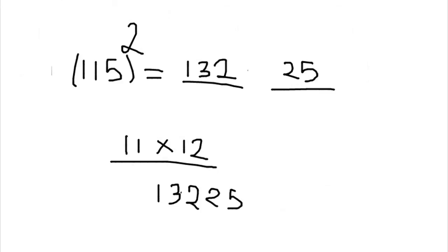So the final answer is 13225. Yes, all you need to do is, if you are going to find the square of a three digit number ending with five, you have to do a little extra effort in order to find out what number will be there in the first place.